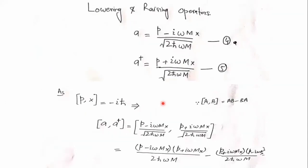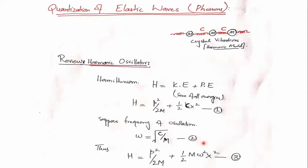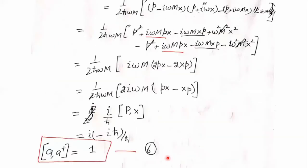We have now introduced the ladder operators. We go back to quantize the Hamiltonian. The Hamiltonian is p²/2m plus half mω²x², and factoring out half m gives p² plus m²ω²x², which we can now rewrite in terms of the ladder operators.